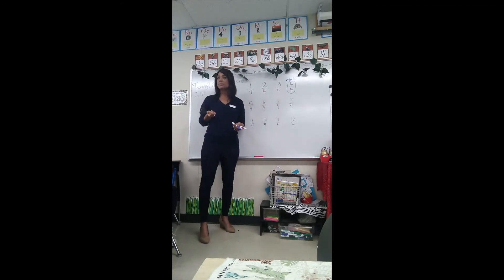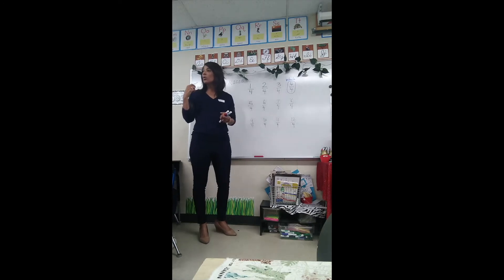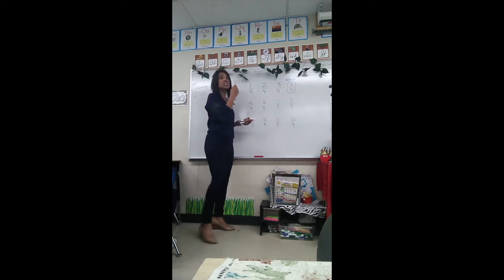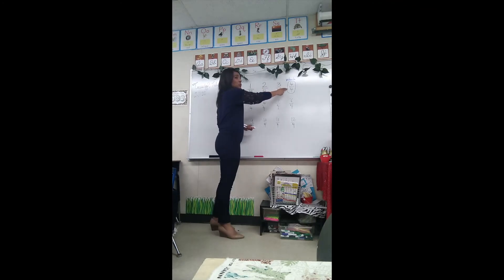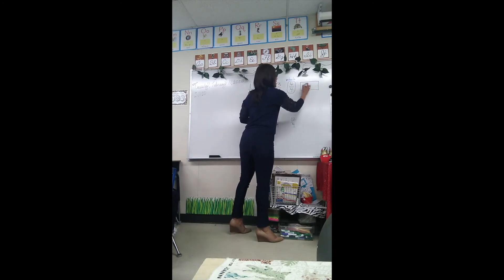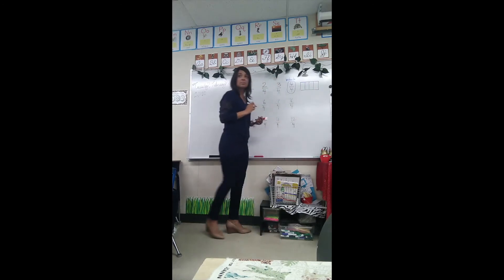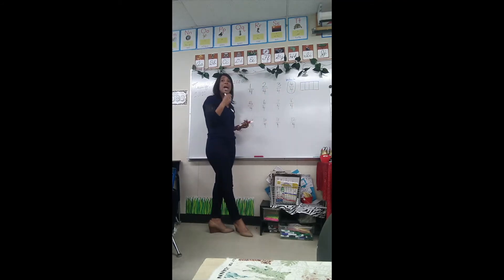Do you know why the denominator never changes? There's a reason it's always four. We're not adding the denominator — we're adding fourths. For example, if I take one whole and divide it into four equal parts, how much is this? One-fourth, one-fourth, one-fourth, one-fourth.